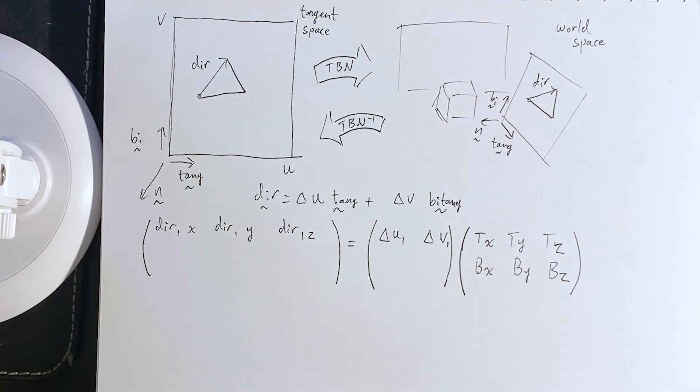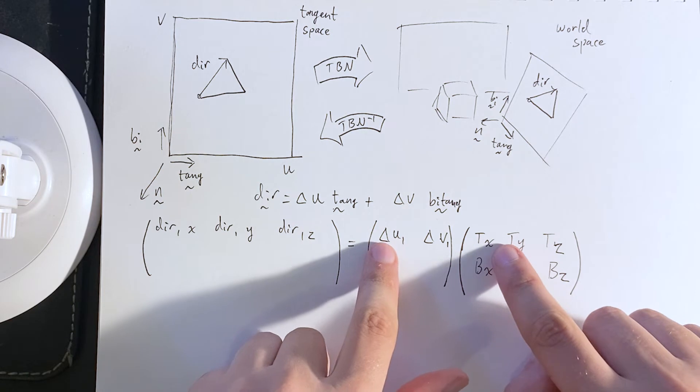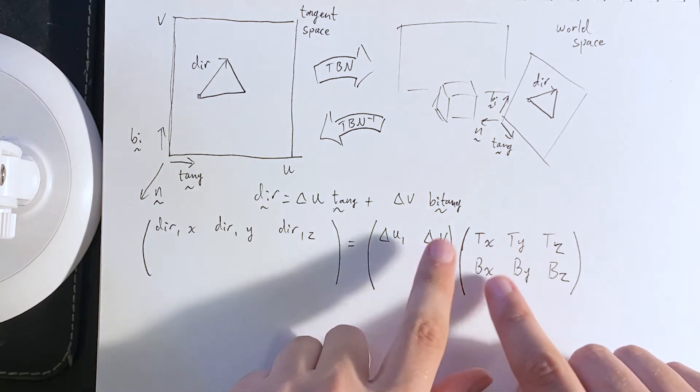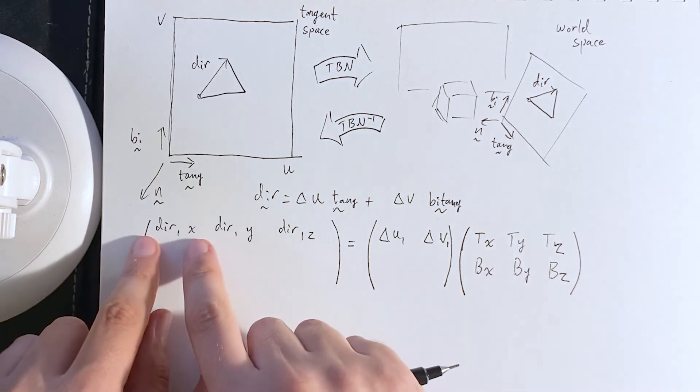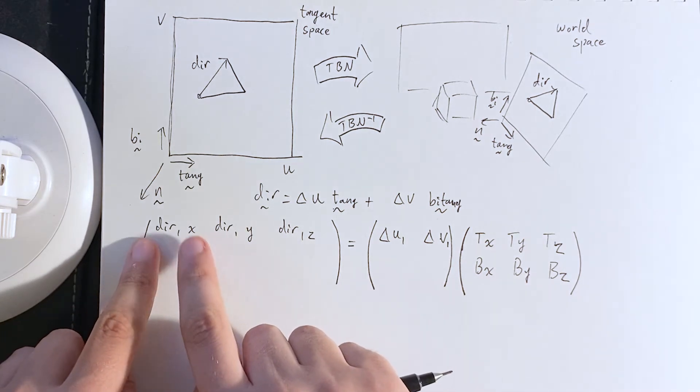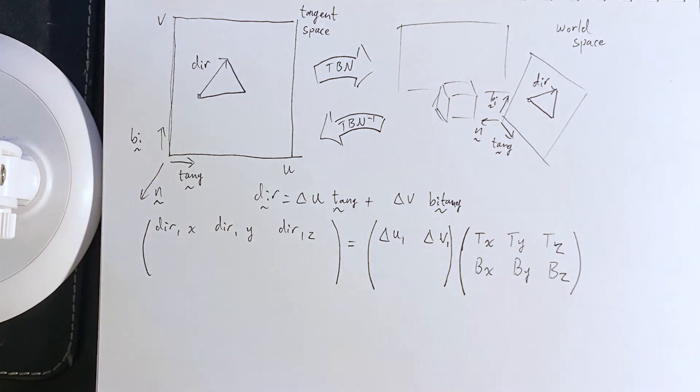So, again, let's double check this. Matrix multiplication. We have delta U1 times the tangent X component, delta V1 times the bitangent X component, add those together, that gives the X component of the direction. And similarly for Y and Z.